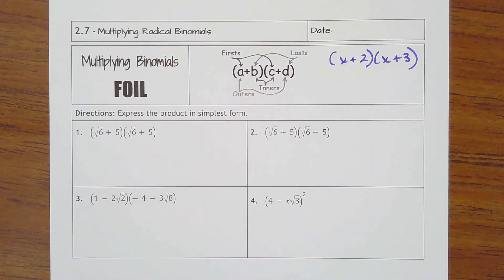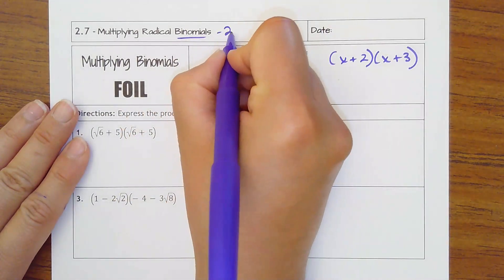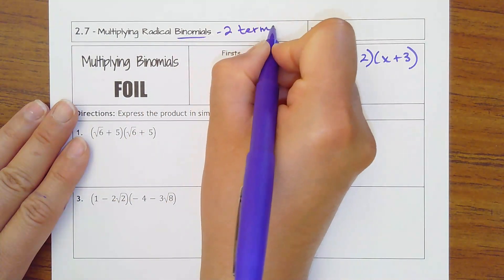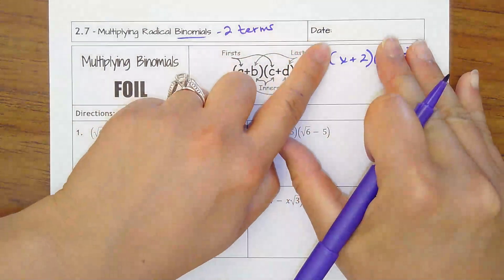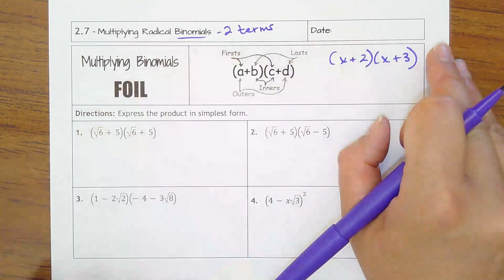Austin, 2.7, multiplying radical binomials. Binomial means it's two terms. So having something like x plus 2, that's a binomial, times x plus 3, another binomial.